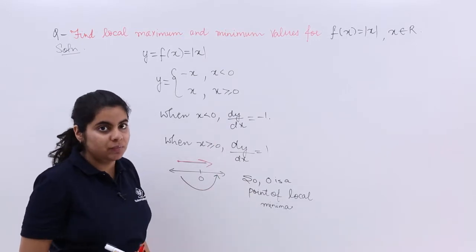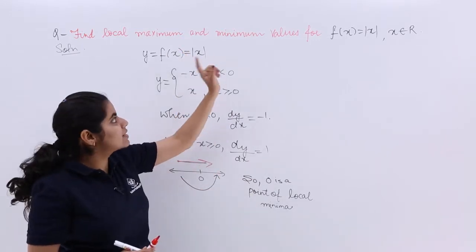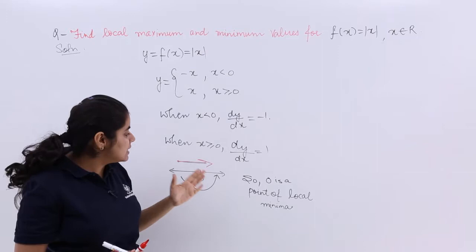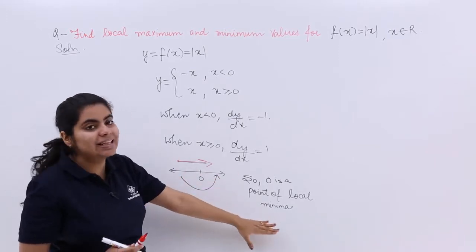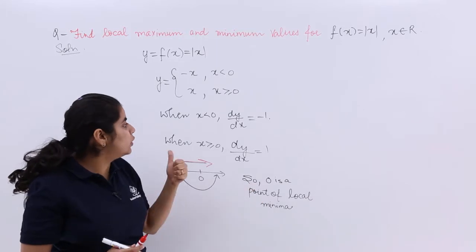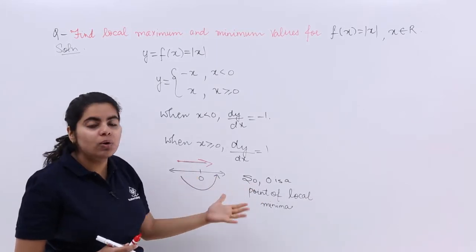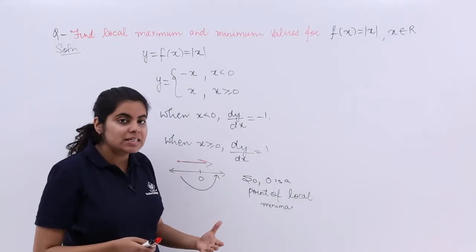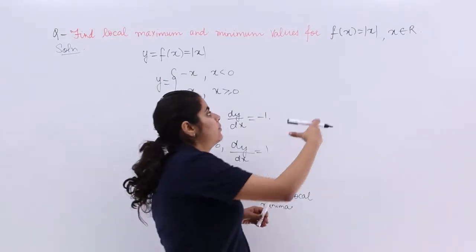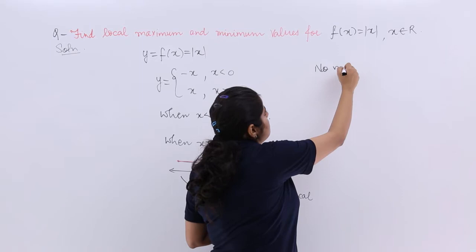Regarding local maxima or local minima, I can say that there is no maximum value, no maxima, but yes there is minima. If 0 is the point of local minima, what is the local minimum value? You can easily find out. I can say there is no maxima, so no maximum value exists.